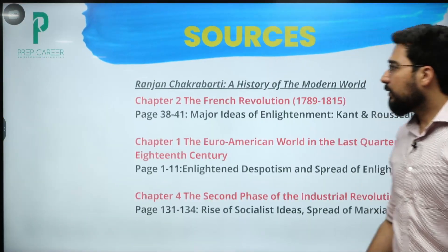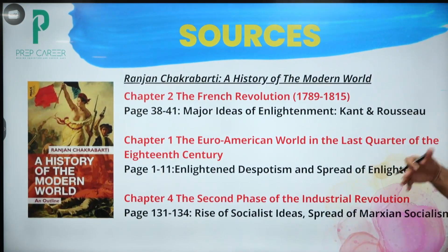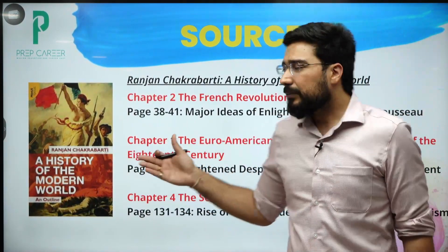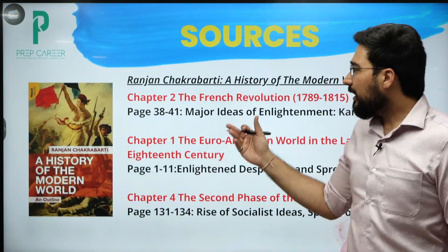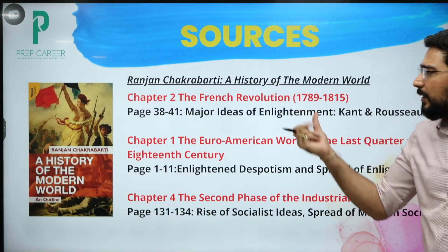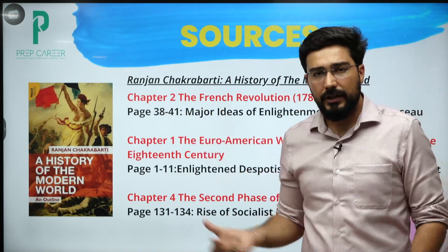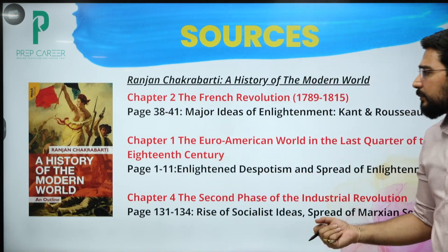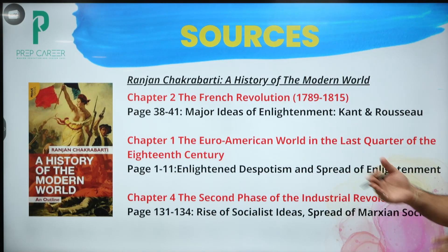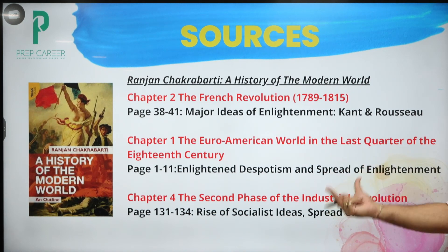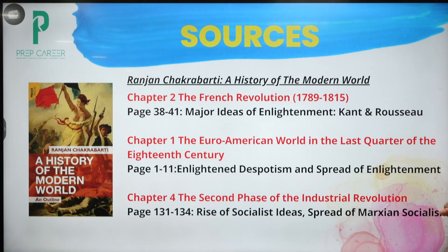For sources — the most famous book that I recommend is Ranjan Chakrabarti. But the content is a bit split: the first part on major ideas of enlightenment you are going to find in chapter number 2 on the French Revolution, page number 38 to 41. Second, enlightened despotism — you will find it in chapter 1, page number 1 to 11. And the spread of ideas of enlightenment — in chapter number 4 you are going to find the rise of socialist ideas and spread of Marxian socialism.